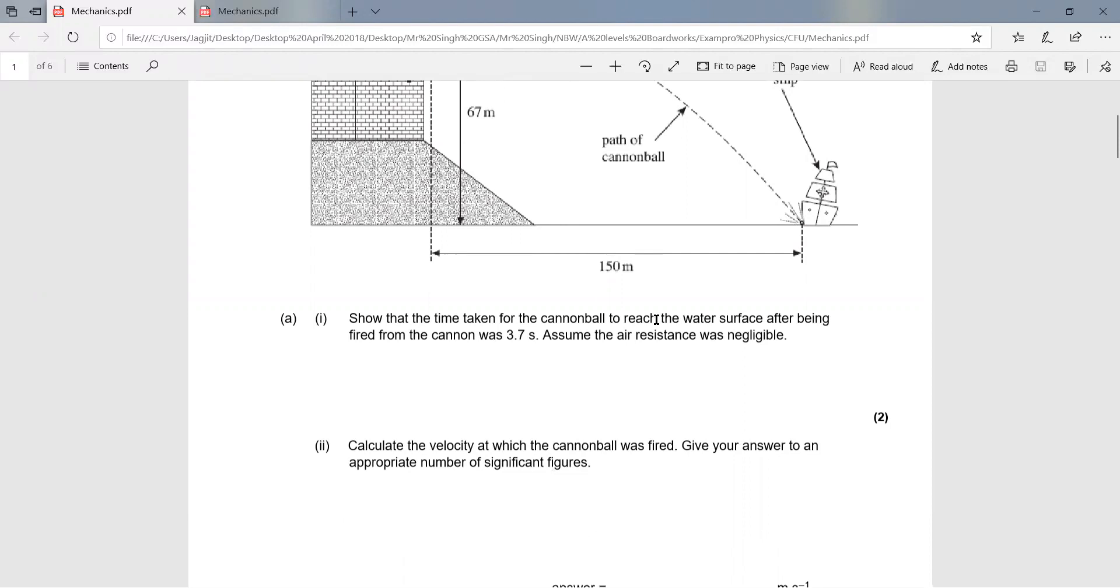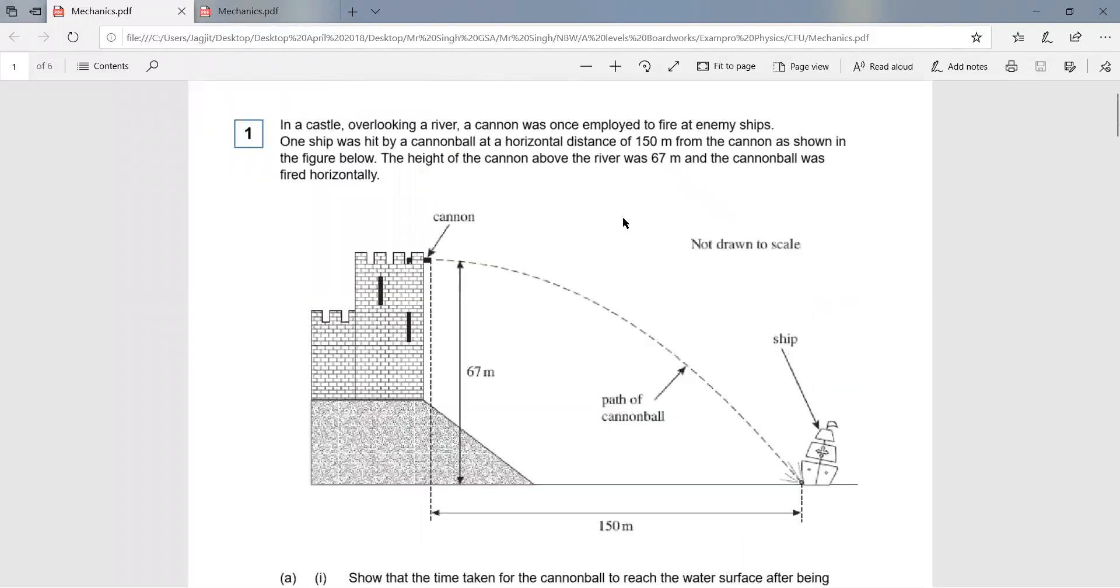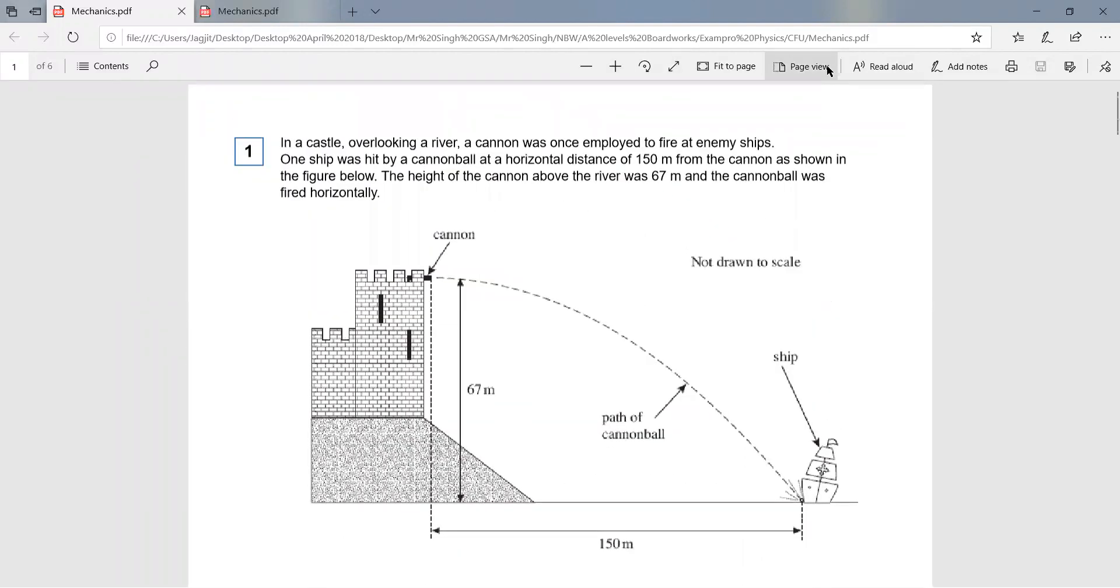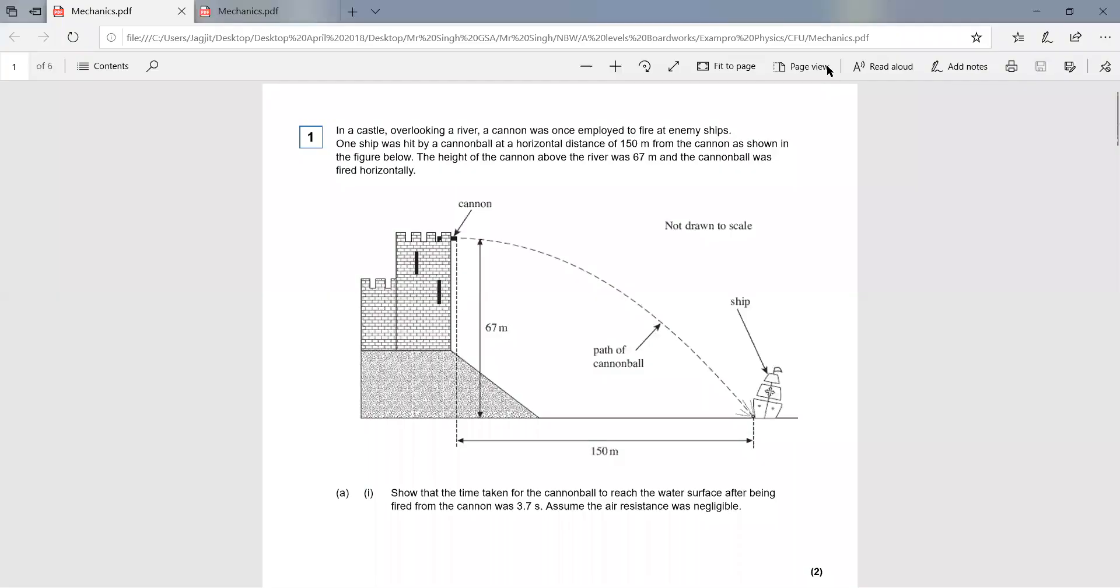For part i, we need to use SUVAT to calculate the vertical velocity. The values we know are the displacement, which is 67 meters, the initial velocity which is zero, the acceleration which is g = 9.81, and the time which is the unknown variable.